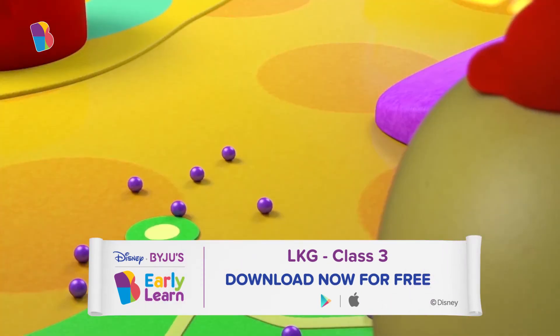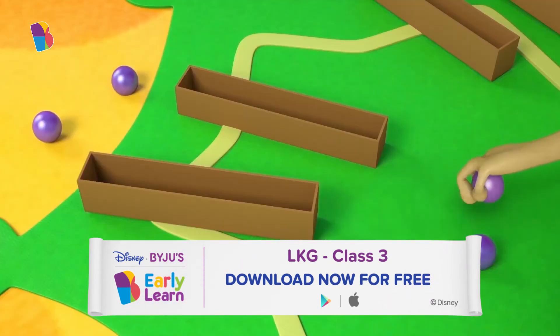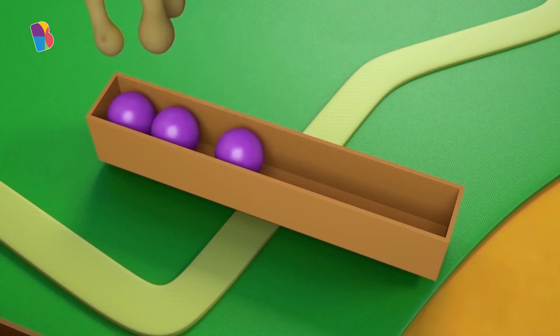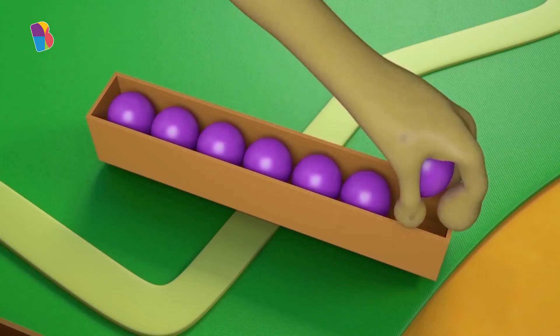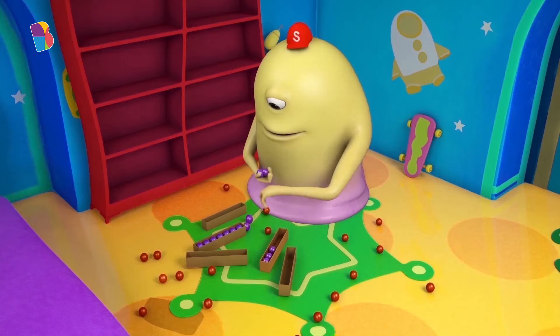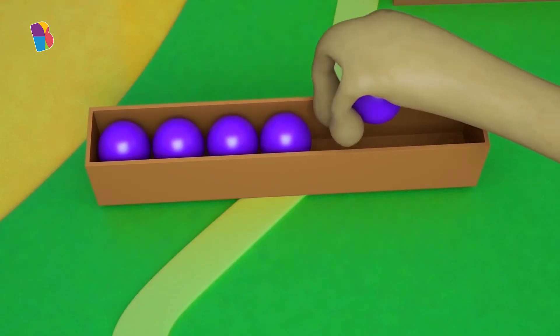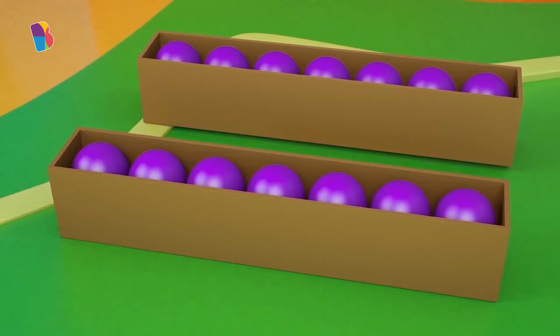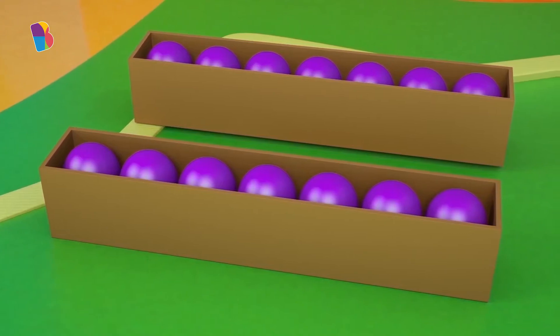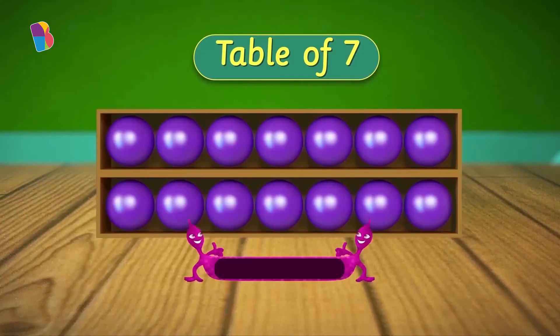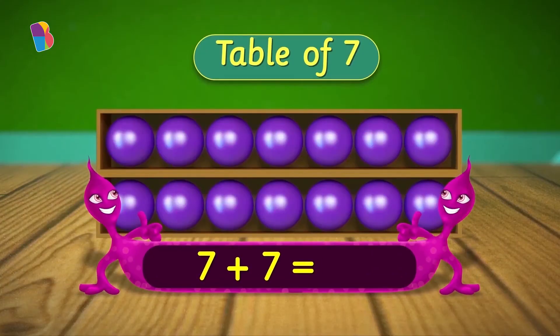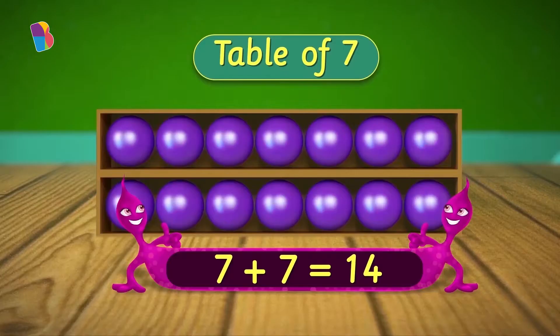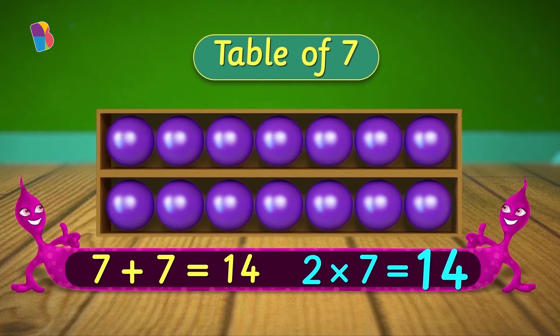Next, the purple jewels. Let's count. One box contains seven jewels and I have two boxes. So how many jewels is that? It is seven plus seven. That is fourteen. So that means two times seven is fourteen. Awesome.